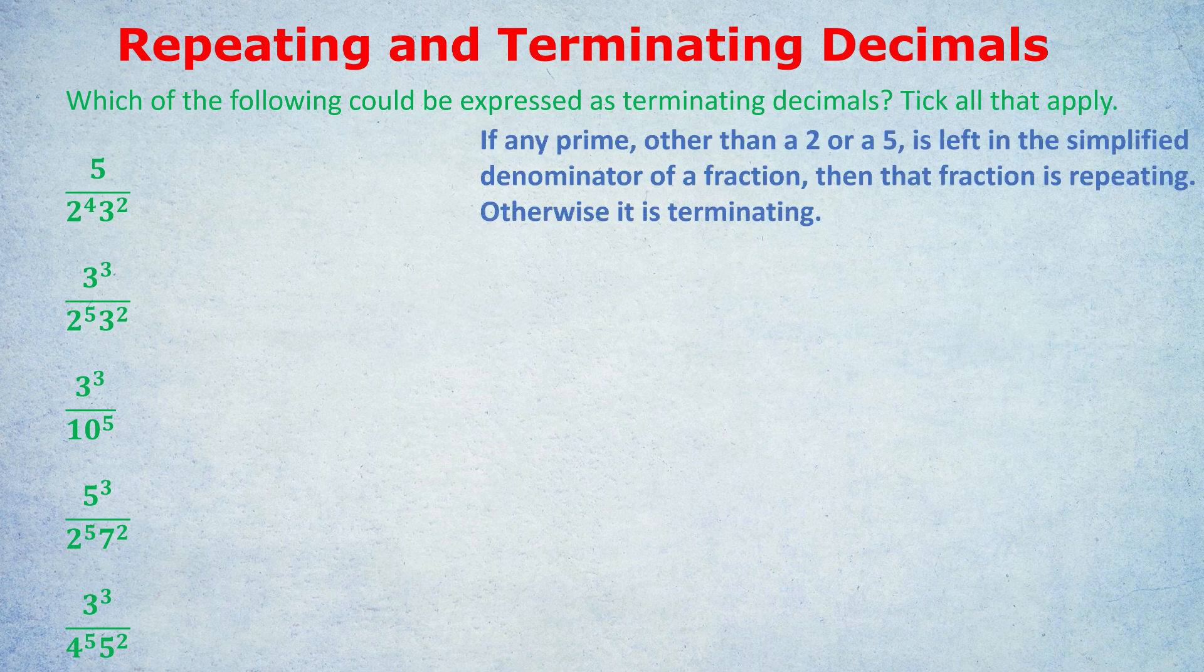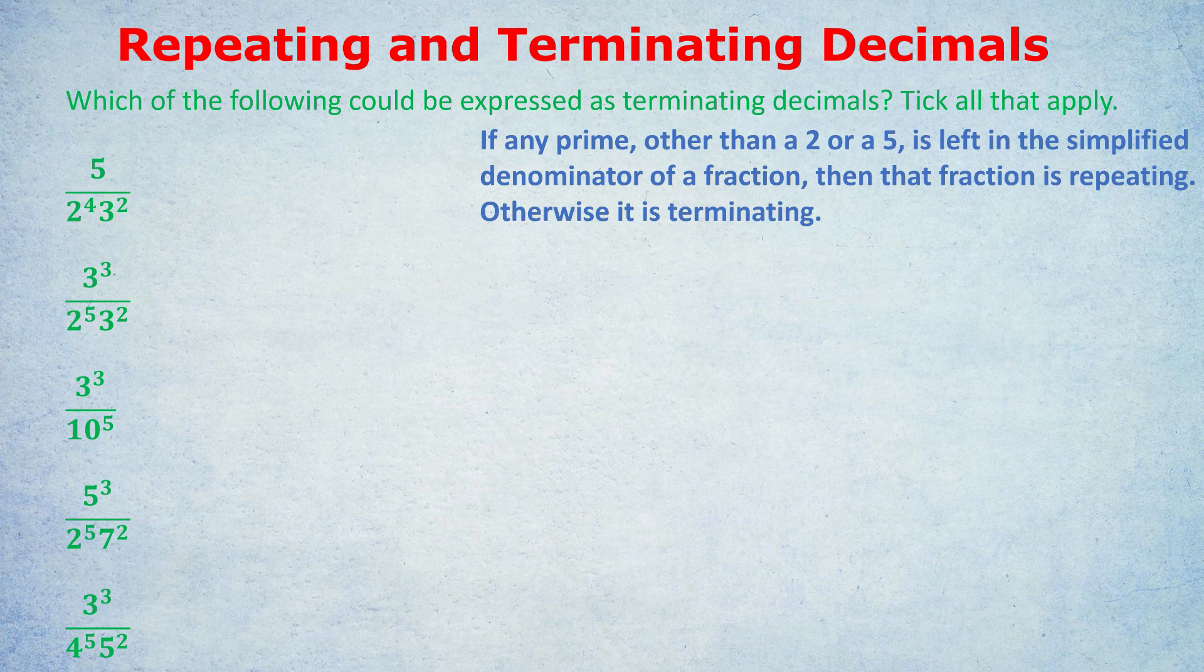But the secret is this. If any prime, other than the numbers 2 or 5, is left in the simplified denominator of a fraction, so it's left in the denominator after you've simplified, then that fraction is repeating. Otherwise, it's terminating. Let me be clear. That's a lot to memorize. But basically, 2s and 5s are allowed in the denominator. That would keep a fraction being terminating. It would stop at a certain point. Basically, the secret is because 2 and 5 go into 10. But if there's any other prime that's left in the denominator, such as an 11, a 3, a 13, any other prime, then that fraction will carry on forever. It will be a repeating or recurring decimal.